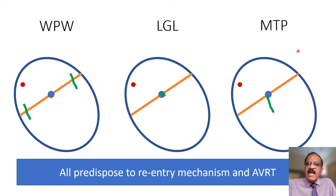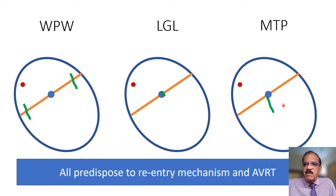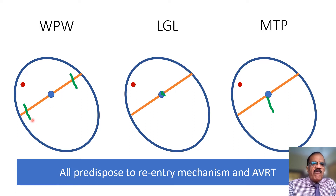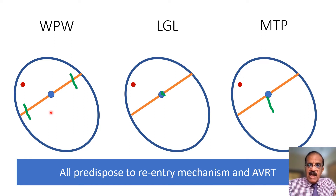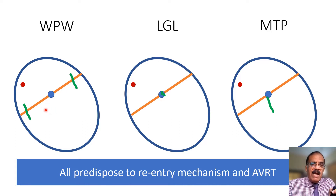The third is Mahaim type defect, where the anomalous pathway goes from the AV node down to the ventricles. There is a normal His bundle and bundle branches, but a shortcut to part of the ventricle exists. During tachycardia, these ECG changes typically disappear or are masked; when the patient is not having tachycardia you can pick up those ECG abnormalities and make a diagnosis.